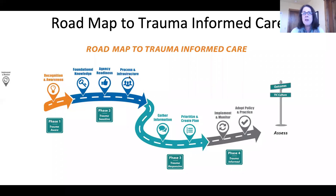We had come across the Missouri model, which is a developmental framework for trauma-informed approaches. They were talking about the phases of implementation, and this language seemed to really resonate with people. With permission from their team, we added this language to our Roadmap to TIC. The first two phases help organizations get ready for implementation. These phases include building awareness, getting training, making sure the agency is ready, and creating process and infrastructure. The second two phases are focused on gathering ideas for TIC, making a work plan, and making trauma-informed changes to policy and practice.